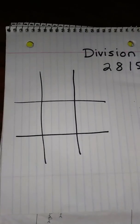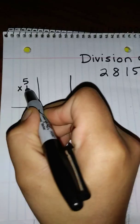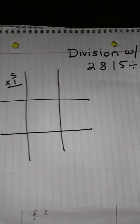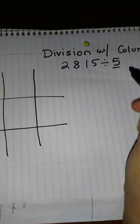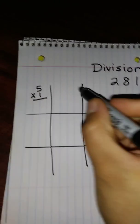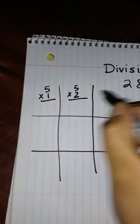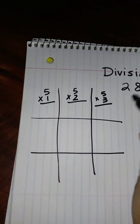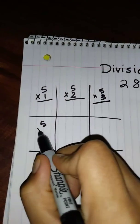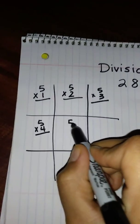Now within each mat I'm going to write the multiples of the number 5 because 5 is my divisor. So I'm going to write in all of my multiples of 5. Now the reason why I label every single thing is so that I know exactly what I am multiplying 5 by.